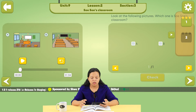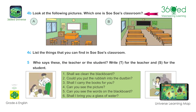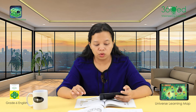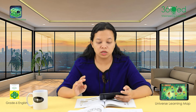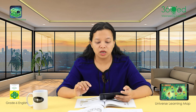Look at the following pictures. Which one is Soso's classroom? Number 5.